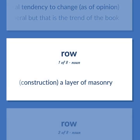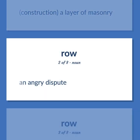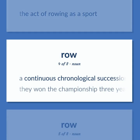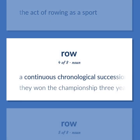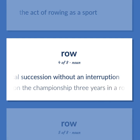Construction: a layer of masonry. An angry dispute. The act of rowing as a sport. A continuous chronological succession without an interruption. They won the championship three years in a row.